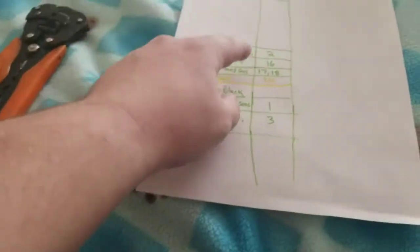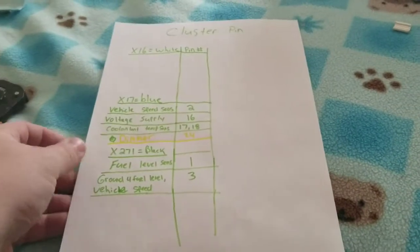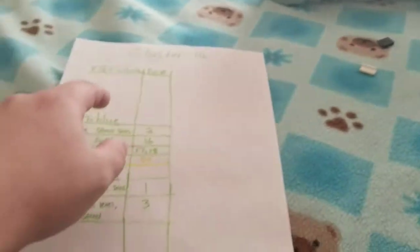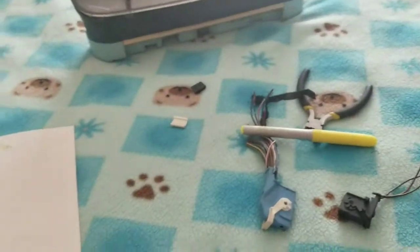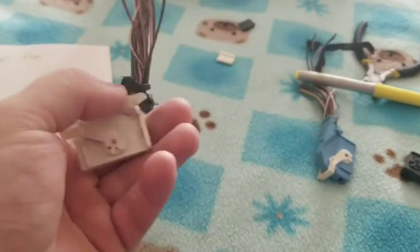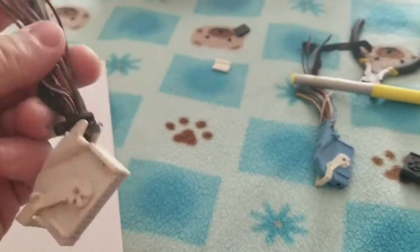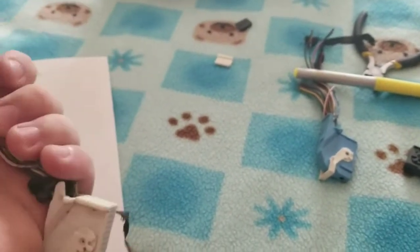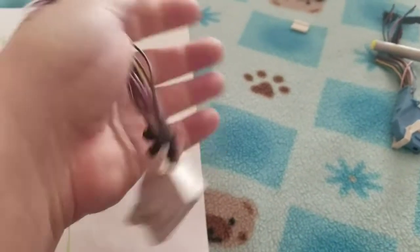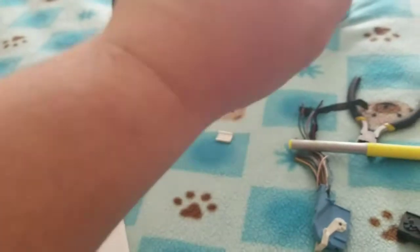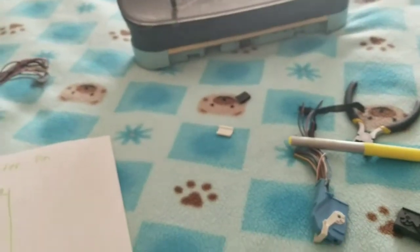We're only going to be utilizing a couple of these because a lot of them I don't need. Like this X16 clip, which is this one right here, pretty much controls everything that I do not even need. So I'm not going to cut it, I'm just going to tape it up and still hook it up. But pretty much what all that does is like turn signals and stuff like that.